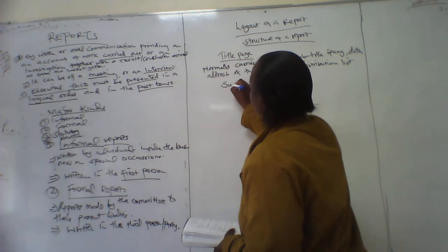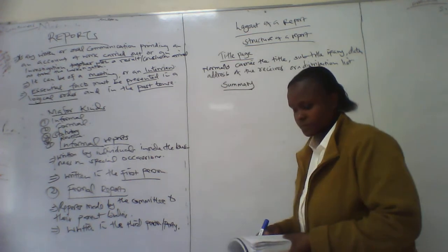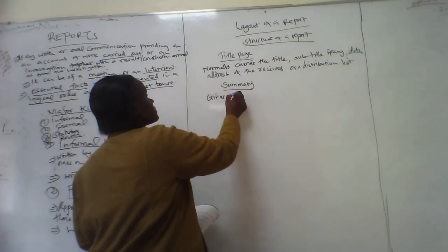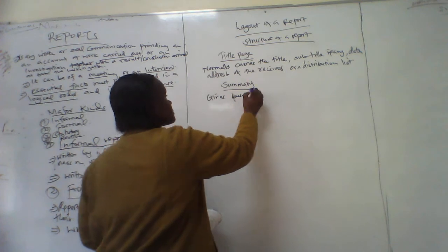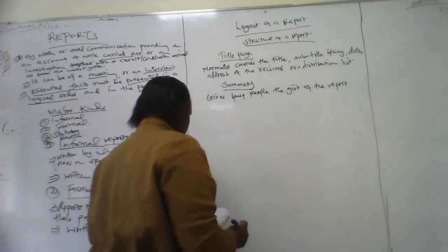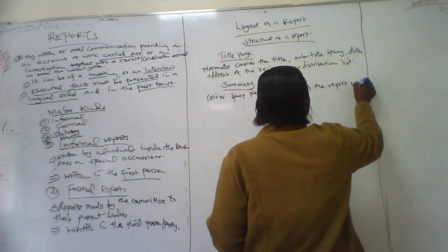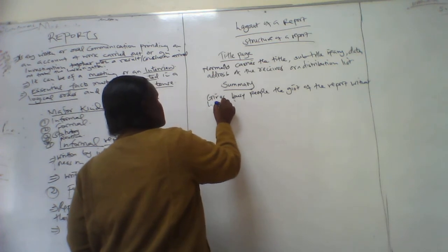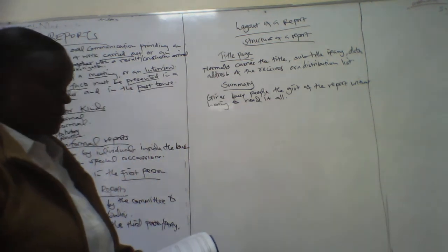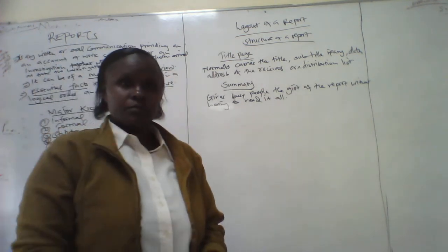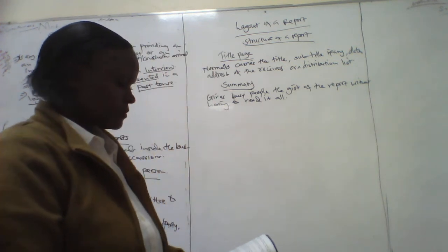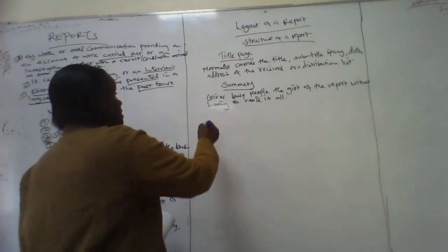Then there is the summary. The summary gives these people the gist of the report without having to read it all. It provides all the information in summary form to the readers without requiring them to read the full document. Summaries should be concise.